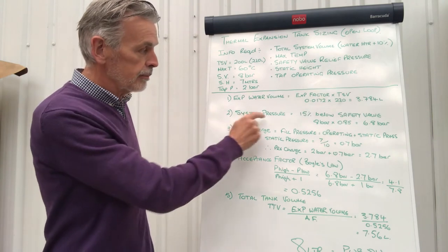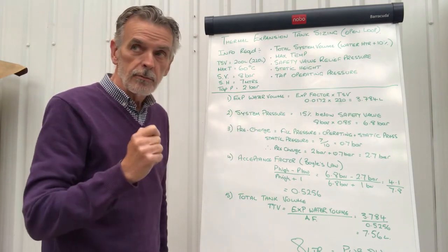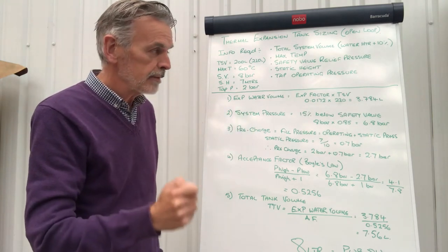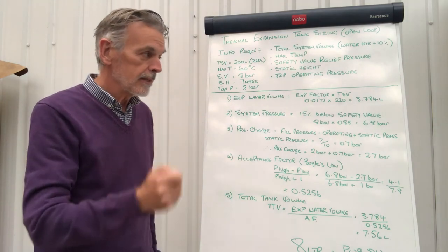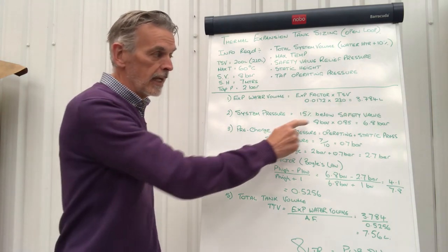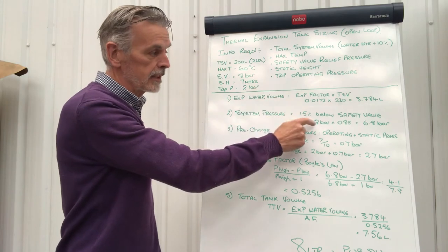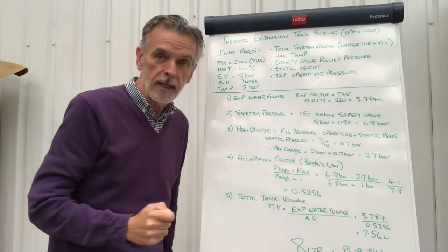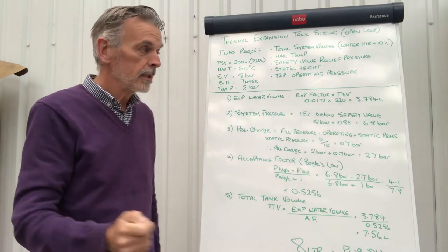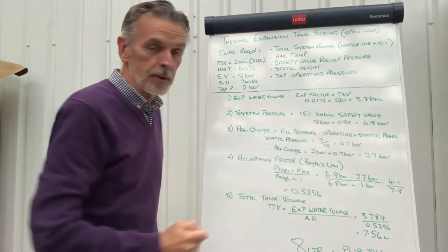Second point, system pressure. The system pressure we say should be 15% below the safety valve. So 8 bar, which is the 8 bar safety valve, times 0.85 will give you 15% below the 8 bar, which is 6.8 bar.